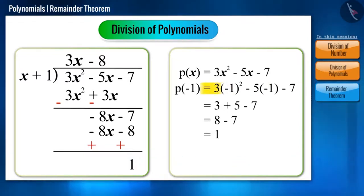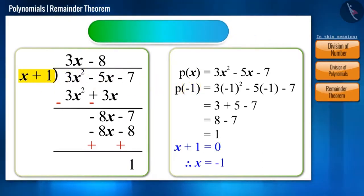And where did we get this minus 1 that we substituted in the polynomial? We got that from the divisor. And this is the remainder theorem.